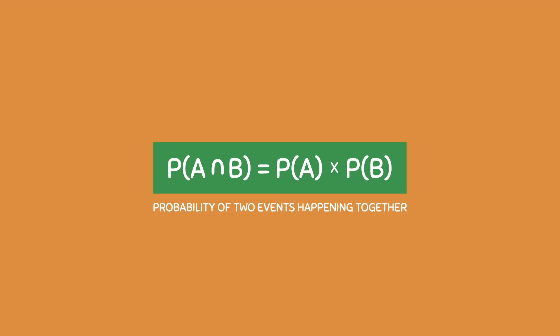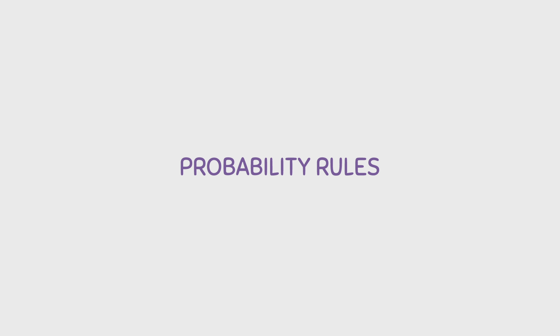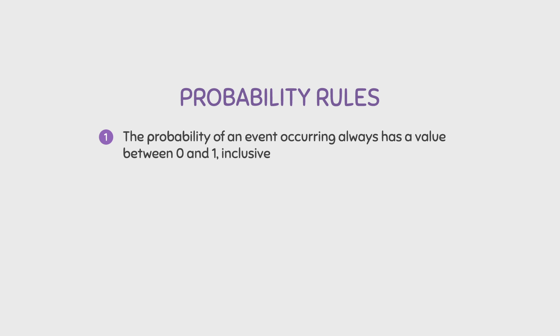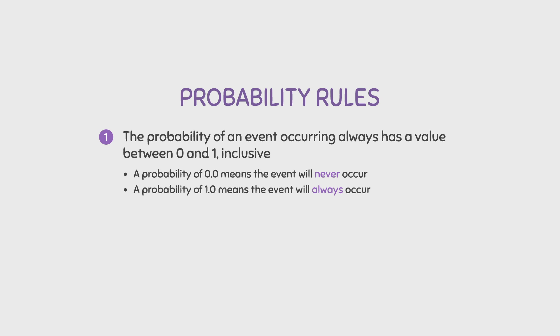As I mentioned before, you can only use this formula if they are independent events, but you will learn about this in the next video. For now, let's talk about some probability rules. With any probability question or problem you might encounter, you'll notice that they always satisfy two conditions. The first condition is that the probability of an event occurring always has a value between 0 and 1 inclusive. A probability of 0 means the event will never occur, and a probability of 1 means the event will always occur. A probability of 0.5 means the event is expected to occur 50% of the time.